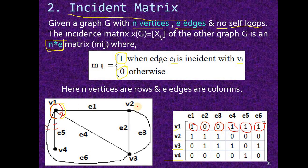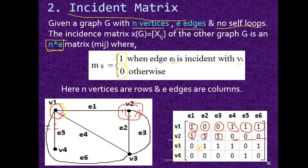Now consider vertex v2. Edges e1, e2, and e3 are incident on vertex v2, so we will write 1 for e1, e2, and e3. Edges e4, e5, and e6 are not incident on v2, so we write 0. For v3, four edges are incident: e2, e3, e4, and e6, so we write 1 for those and 0 for all others. For v4, only one edge is incident — e5 — so we write 1 at the position of e5, and all other places are 0.